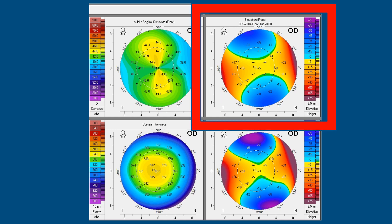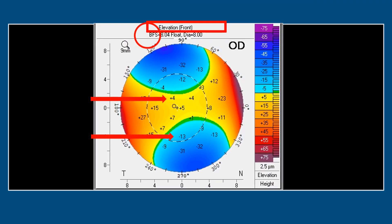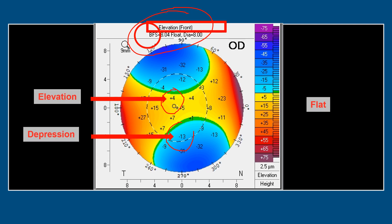The anterior elevation map also shows elevation in comparison to the best fit sphere. The plus values indicate elevation — protrusion of the cornea above the best fit sphere — and minus values indicate depression. A value of 0 means the cornea is exactly at the best fit sphere level.